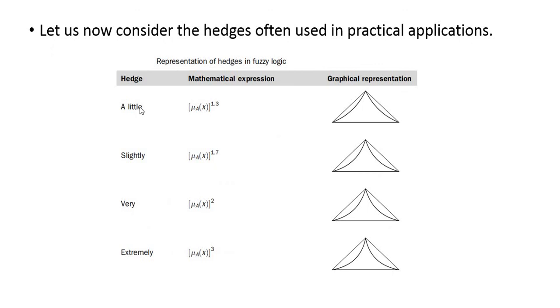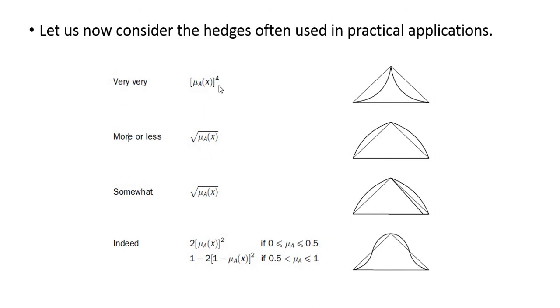When you put hedges, a little may be represented by power of 1.3, slightly by power of 1.7, very by power of 2, and extremely by power of 3. Very, very, very powerful, more or less, somewhat, and indeed will represent different shapes, especially for practical applications.